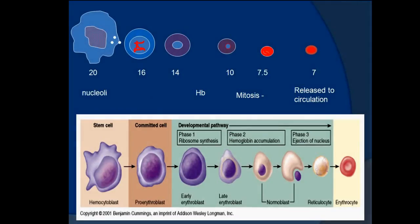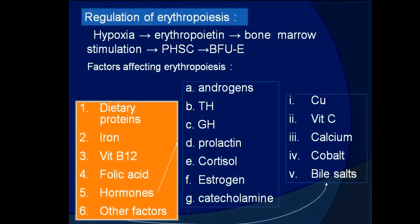The developmental pathway divides into three divisions: stem cell (hemocytoblast), committed cell (pro-erythroblast), and the developmental pathway including early erythroblast, late erythroblast, normoblast, reticulocyte, and erythrocyte. Phase one concerns ribosome synthesis, phase two concerns hemoglobin accumulation, and phase three concerns ejection of the nucleus.